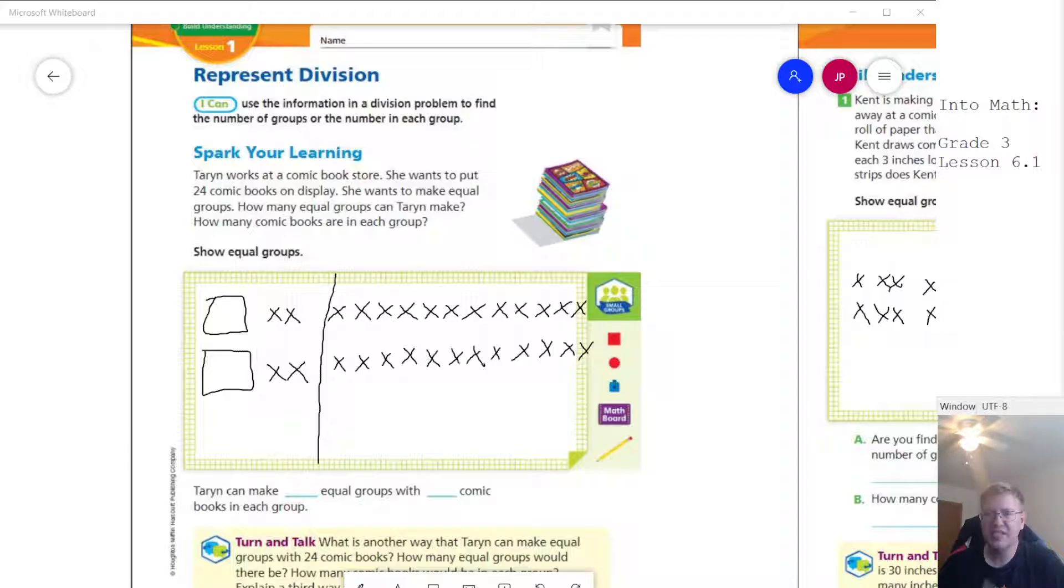To give you an idea, we're going to be working with a couple problems where we're making equal groups. We're going to start with our large number, then break it up into equal groups and figure out how many groups we can make. Let's go ahead and take a look at our first problem.